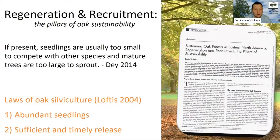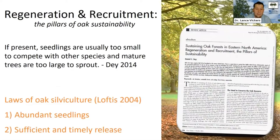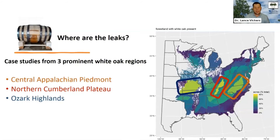Day says that regeneration and recruitment are the pillars of oak sustainability. The situation tends to be that if oak seedlings are present, they're usually too small to compete with all the other species in the understory of today's forests, and any mature trees we might have are too large to reliably sprout. This violates what Dave Loftus called the two laws of oak: you need to have abundant seedlings in place, and when you have those in place, you need to give them sufficient and timely release.